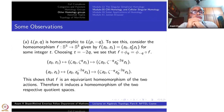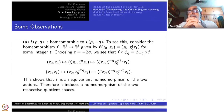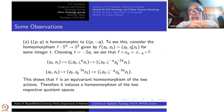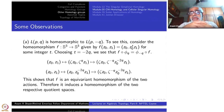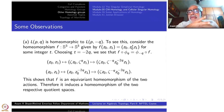Coming back to finite lens spaces, there are some easy observations. L(p,q) depends on both p and q, but there are relations. Namely, L(p,q) is homeomorphic — in fact diffeomorphic — to L(p,−q), since negative numbers are also allowed as long as they are co-prime to p.